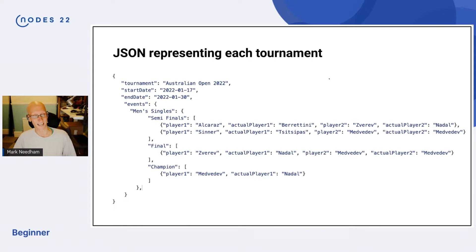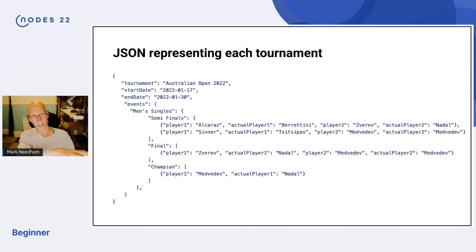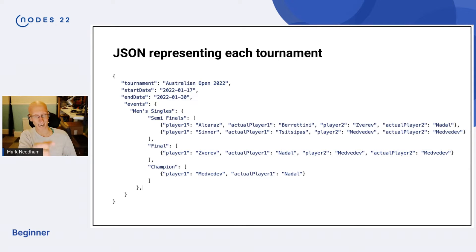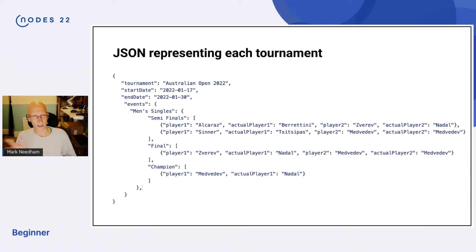The first version I did was just some JSON files — I put some JSON files in GitHub. The tournament had some metadata about the tournament, then I had the events, because there are men's singles and women's singles. I'm not skillful enough to do doubles so I didn't try. Within each event I would have the actual player that got to that particular part of the draw, the one I thought it was, and then the other side of the draw as well. This was all working fine for every tournament.